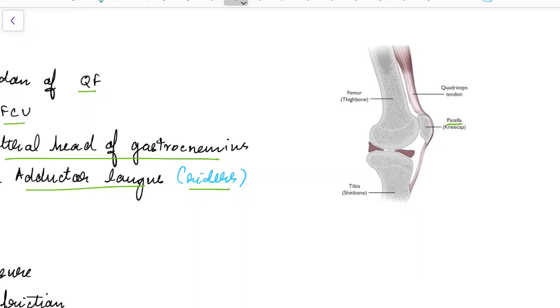This picture shows the patella in the tendon of quadriceps femoris. This is an example of a sesamoid bone.